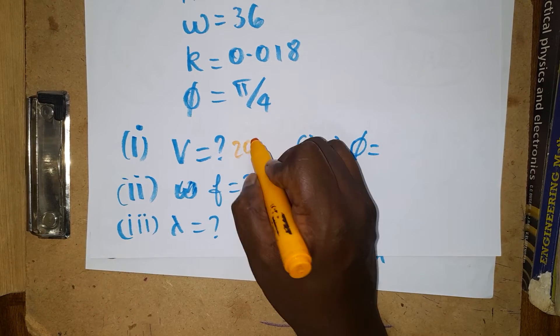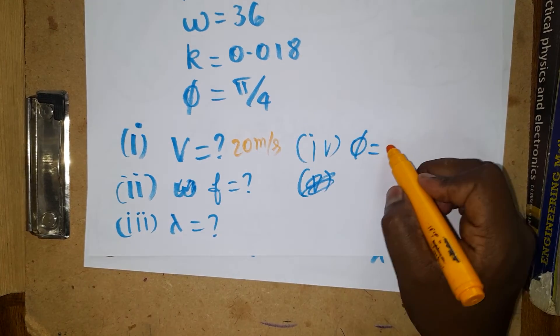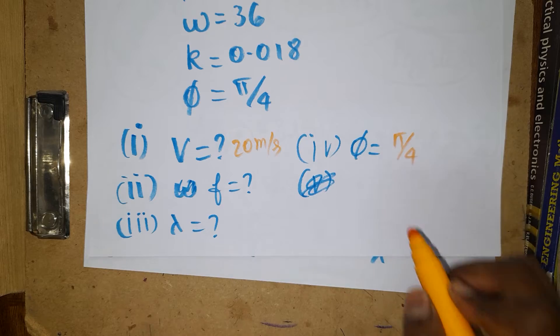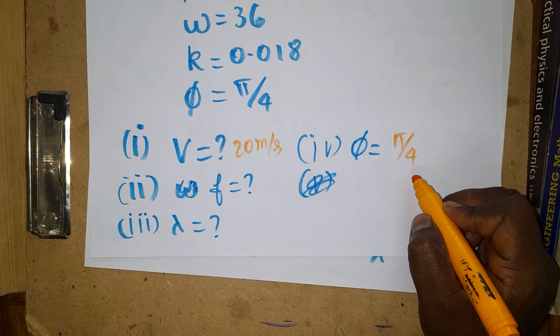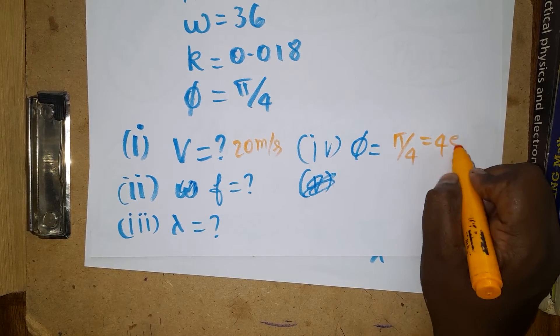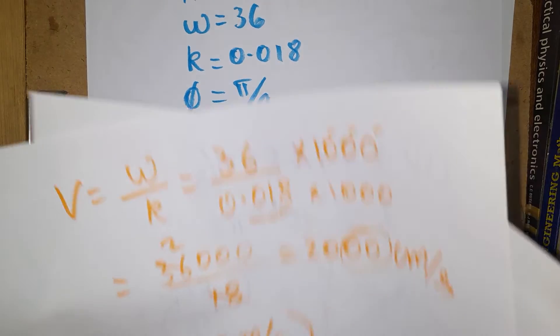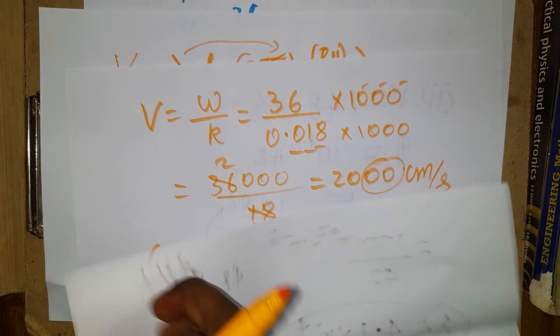The phase difference φ = π/4. Converting to degrees: π/4 = 180°/4 = 45°. So the phase difference is 45 degrees.